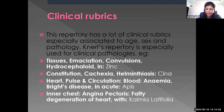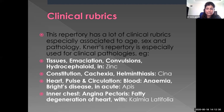Some clinical rubrics included in this repertory: this repertory has many clinical rubrics especially associated with age, sex, and pathology. Neer's Repertory is especially useful for clinical pathology. For example, under Tissues — emaciation, convergence, hydrocephaloid; the remedy is Zincum. Under Constitution — cachexia, lienthesis; the remedy is Senna. Under Heart pulse and circulation — blood, anemia, Bright's disease in acute; the drug is Apis. Under Inner chest — angina pectoris, fatty degeneration of heart; the drug is Kalmia.